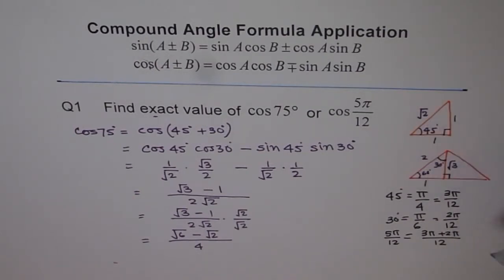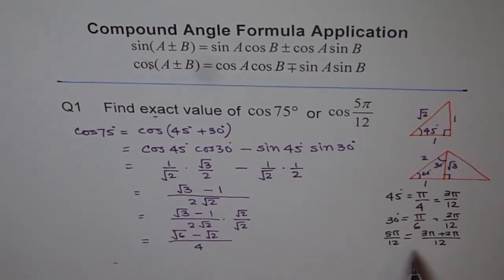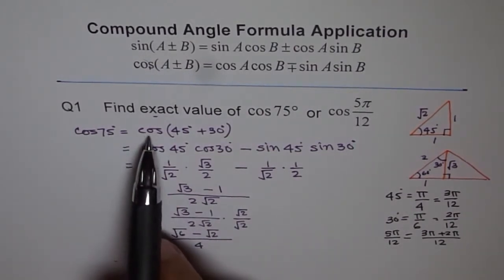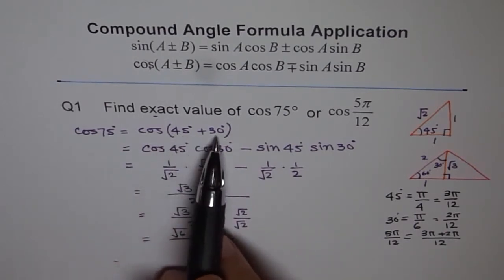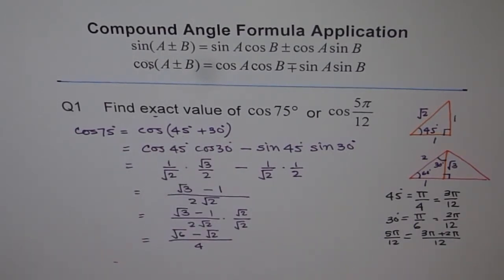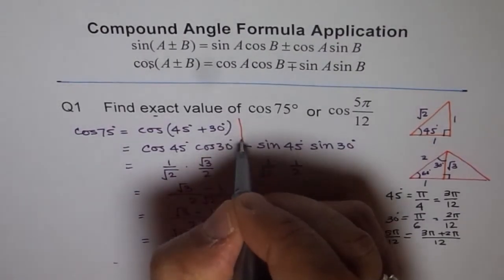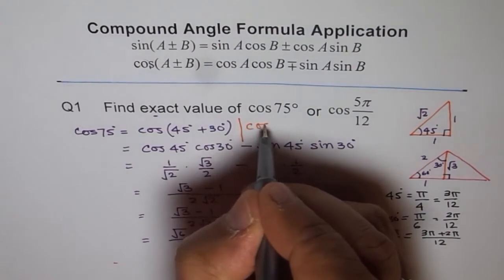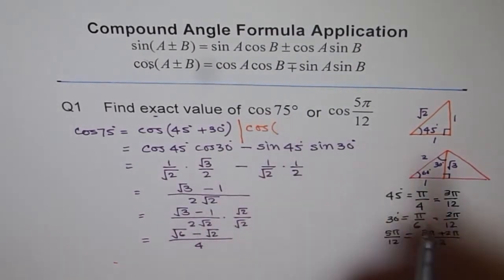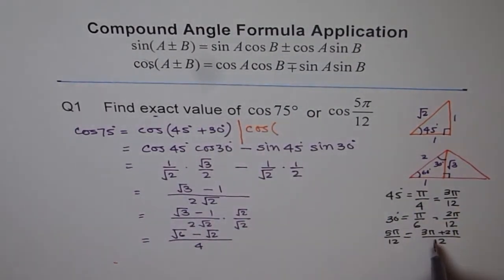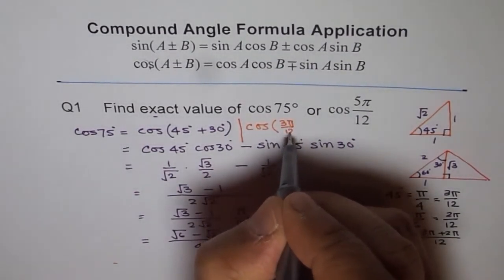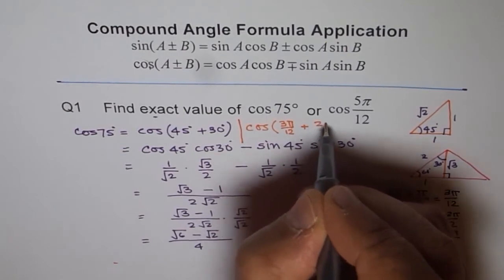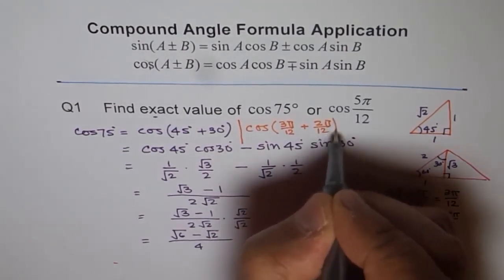So, this type of splitting helps. So, basically what will happen is, here you will write this as, instead of 45° plus 30°, you will write this as, let me write this in a different color. So, you will write this part as, cos of 45°, you will actually write 3π/12 plus 2π/12, right? 3π/12 plus 2π/12, right? That is all.